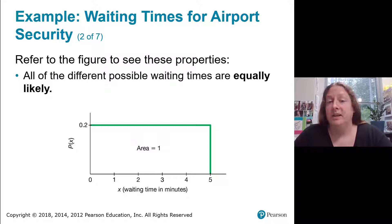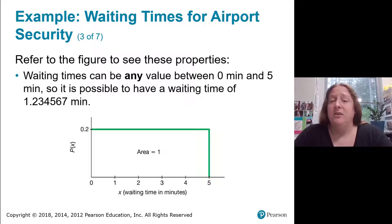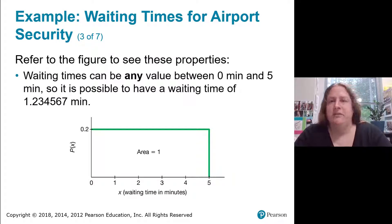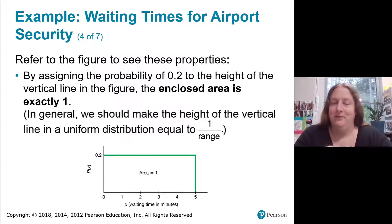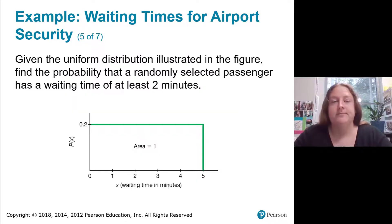That's what it looks like for equally likely waiting times. Waiting times can be any value between zero and five minutes, so it's really possible to have waiting times anywhere along the way. The enclosed area is exactly one — basically one over our range, or one over how far it goes horizontally on our x-axis.